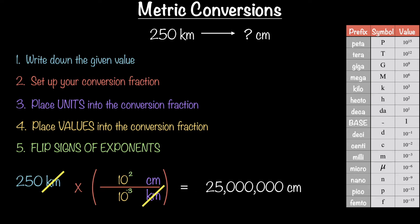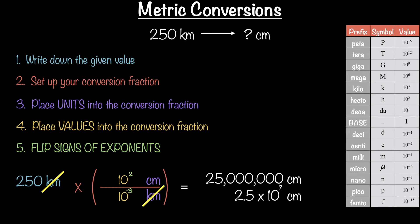The answer is 25 million centimeters, or 2.5 times 10 to the seventh centimeters. And that's it! You can literally do all metric conversions this way in a single step. There's no need to convert from kilometers to meters and then to centimeters — that's unnecessary. Let's do one more example and see just how quick this is.